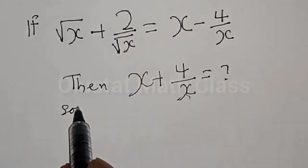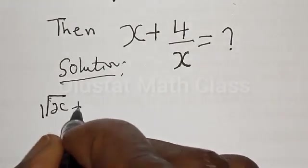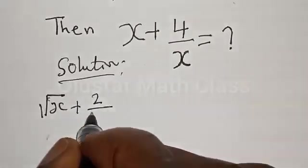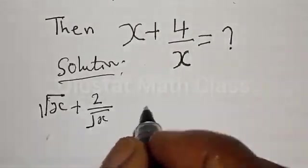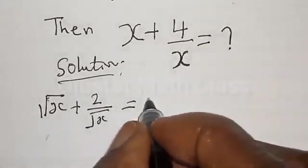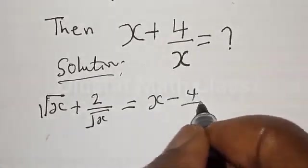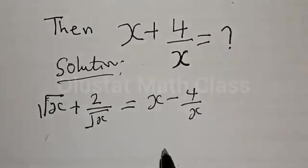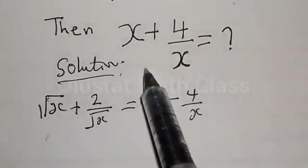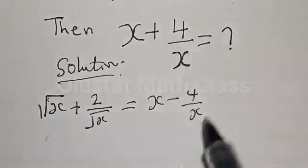Solution. We have square root of s plus 2 divided by square root of s equal to x minus 4 over x. So we want to look at how we can factorize this in order to get the value of s plus 4 divided by x.